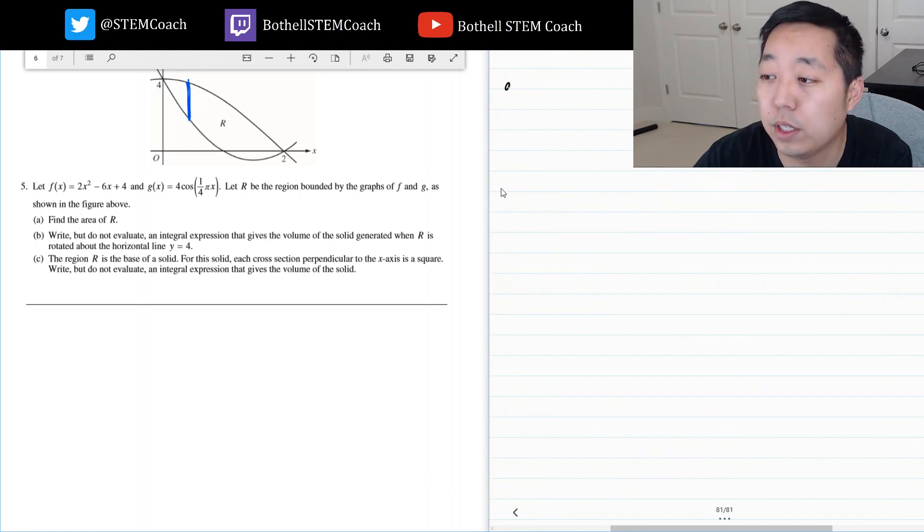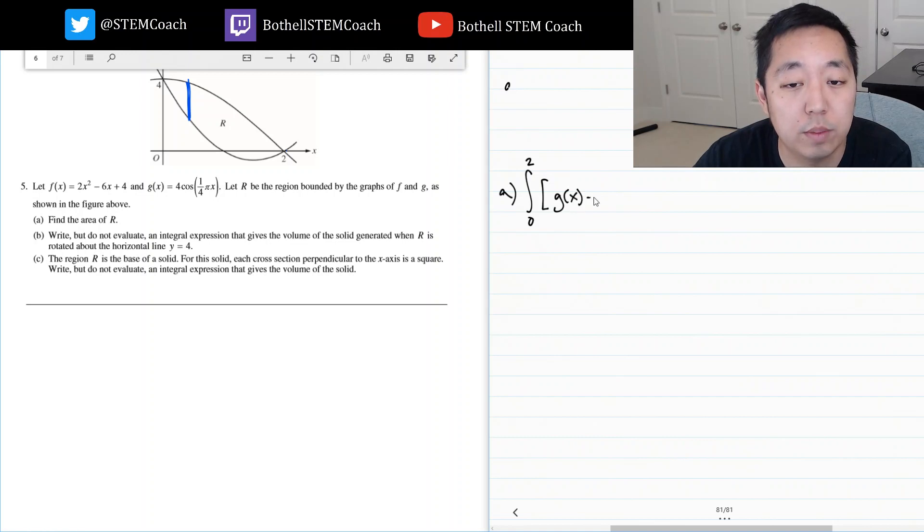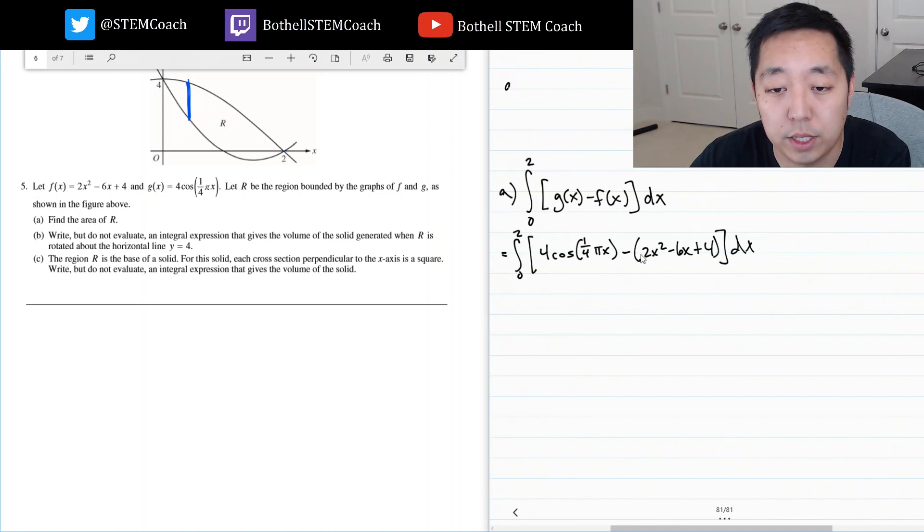Down here, I'm going to do the area from 0 to 2, from x equals 0 to 2. I'm going to add up the area of these rectangles. What are the height of the rectangles? It's g(x) minus f(x) dx. That's the integral 0 to 2, 4cos(1/4 π x) minus 2x² - 6x + 4. I can distribute the negative sign and put a negative here, make that positive, make that negative.